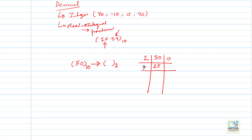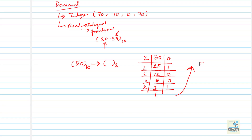Then 2 times 12 is 24, 25 minus 24 gives remainder 1. Then 2 times 6 is 12, remainder 0. Then 2 times 3 is 6, remainder 0. Then 2 times 1 is 2, 3 minus 2 gives remainder 1. Since the value is less than 2 we cannot go further. Reading bottom to top, the result is 110010 base 2.